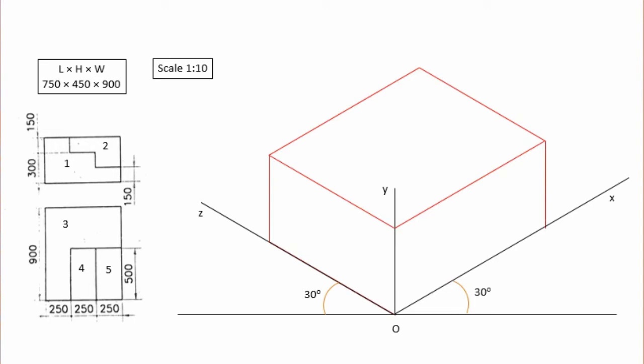We have a box in isometric view. We will complete the size of this line. The box is created. We have the surface of the front view. The height is 75 and the height is 45. I am going to start with the origin mark, and the point starts from the front view.